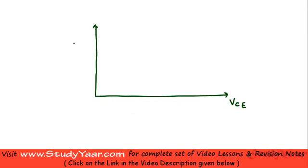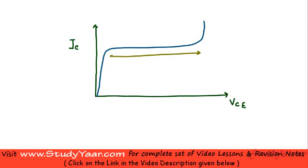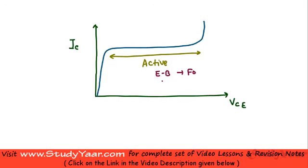That is large current flowing through your base. Now looking at your output characteristics — the graph of VCE versus your collector current — you're going to realize it looks basically like this. The region where your collector current remains constant is known as your active region. In the active region, as you've seen earlier, your emitter-to-base junction is forward biased and your collector-to-base junction is reverse biased.